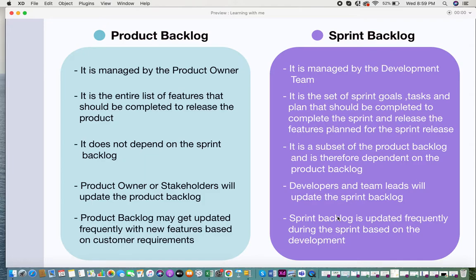The product owner and stakeholders will update the product backlog. If you're a product owner, or stakeholders involved in that product, they might be the ones updating your product backlog. When it comes to the sprint backlog, it's the development team who keeps updating it.